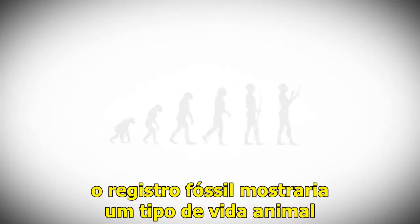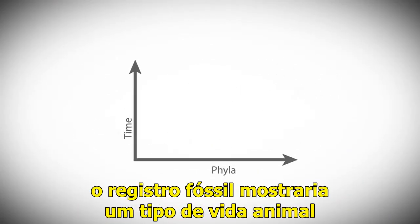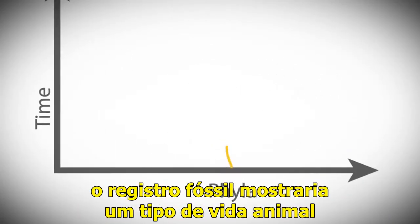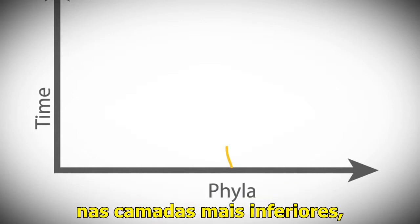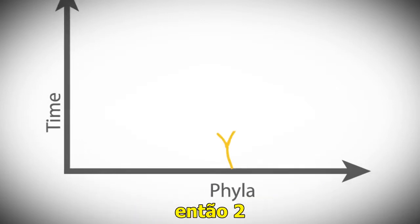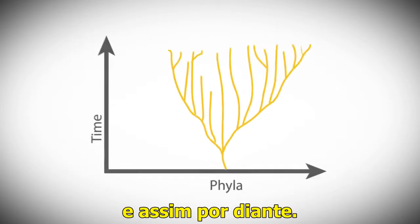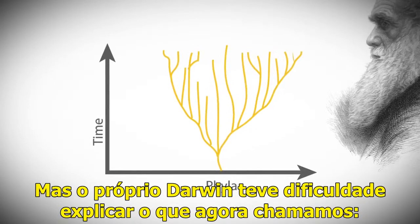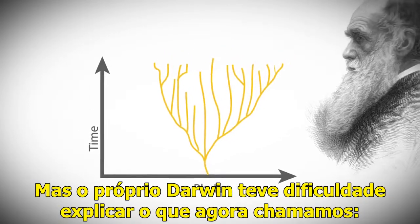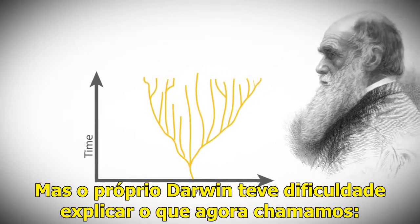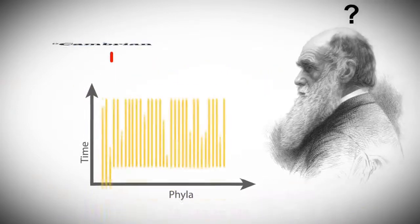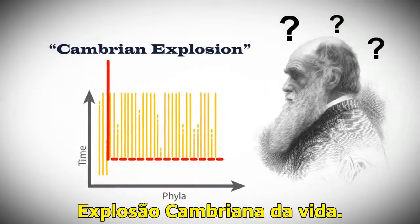If evolution were true, the fossil record should show one type of animal life in the lowest layers, then two, then four, and so on. But Darwin himself had a difficult time explaining what we now call the Cambrian explosion of life.